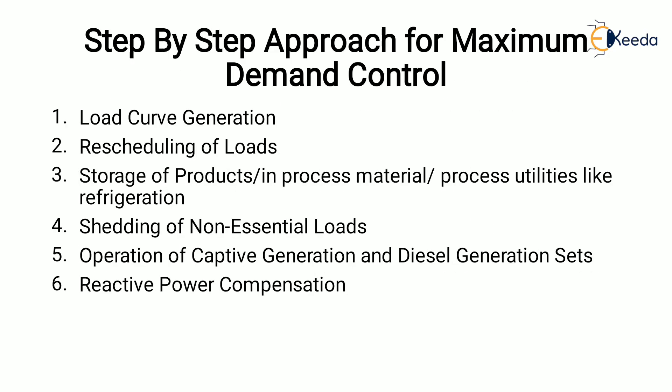Now let us see how maximum demand can be controlled. These are the step-by-step approaches for maximum demand control: first, load curve generation; second, rescheduling of loads; third, storage of products or process material and process utilities like refrigeration; fourth, shedding of non-essential loads; fifth, operation of captive generation and diesel generation sets; and sixth, reactive power compensation.